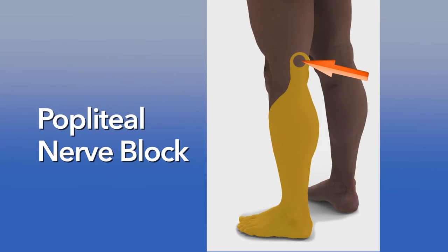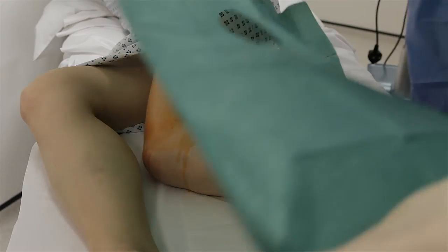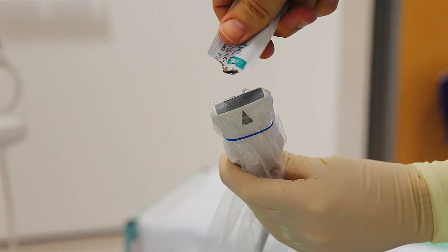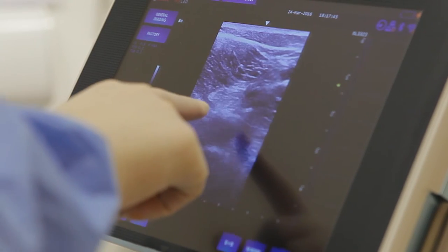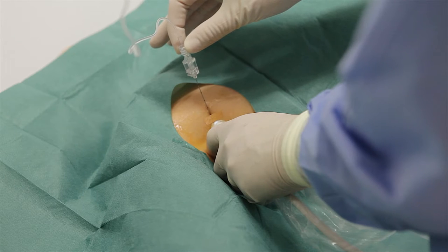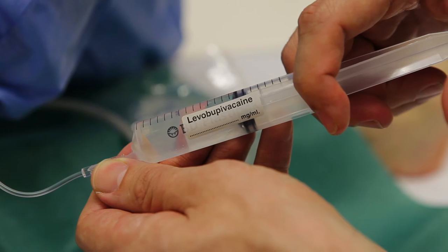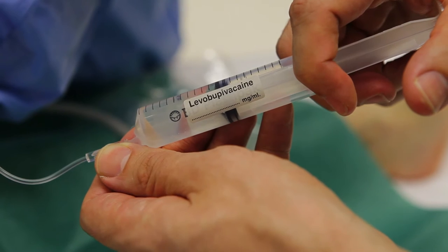Popliteal nerve block. The popliteal nerve block is used for extended foot and ankle surgery including ankle replacement. The popliteal nerve block may be administered before or after a general anaesthetic. The block is usually performed under ultrasound guidance. Alternatively, your anaesthetist may use a special nerve stimulating needle to locate the nerve. A popliteal nerve block consists of injecting local anaesthetic at the back or side of your knee around a single nerve called the sciatic nerve.